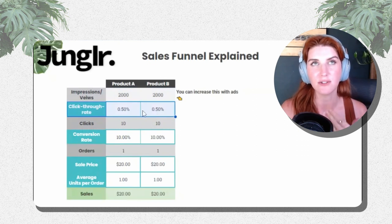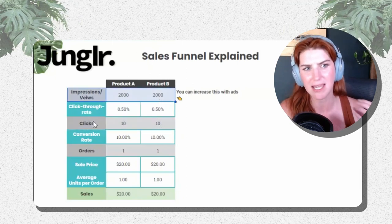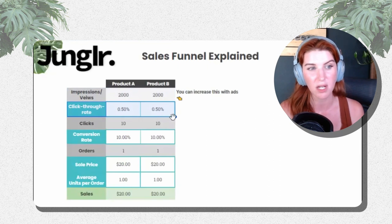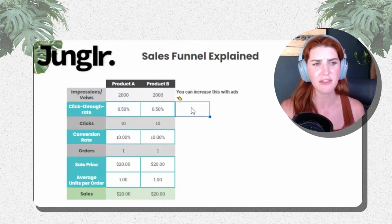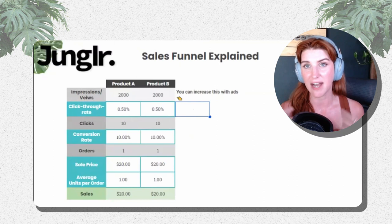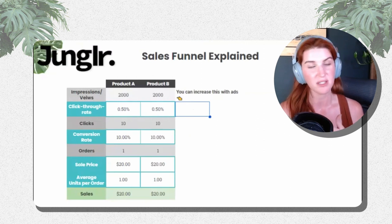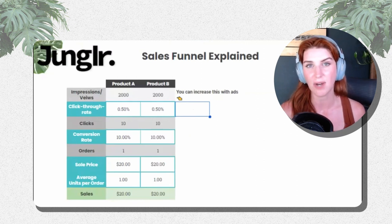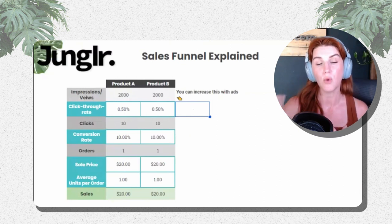Click-through rate is determining the amount of people who click through once they see your product. To drive more clicks, yes you could increase your bid and get more impressions, but really what gets more clicks is having more viewers opt themselves in. The things you can optimize are what the shopper sees when they run across your product: your main image, reviews — which are so important — your price point, and any coupons or deals you're running.